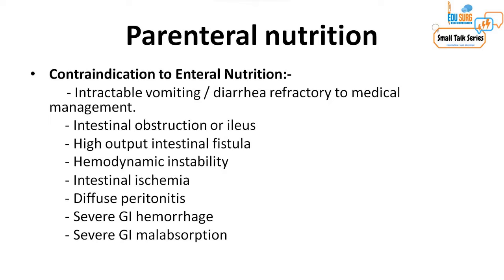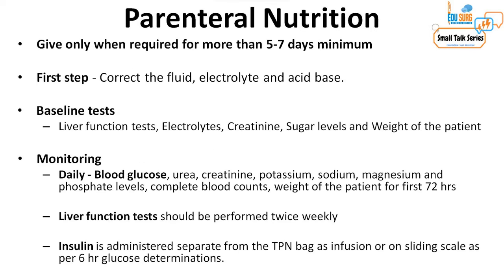Other indications for parenteral nutrition include intestinal ischemia, diffuse peritonitis causing ileus, severe gastrointestinal hemorrhage leading to hemodynamic instability, and malabsorption. A key point when considering parenteral nutrition is that it must be planned for a minimum of five to seven days. Giving one or two bags of TPN and stopping is not helpful to the patient.